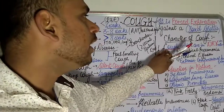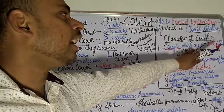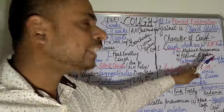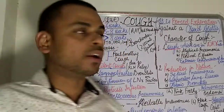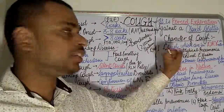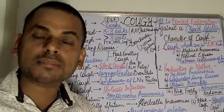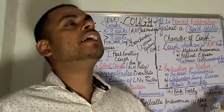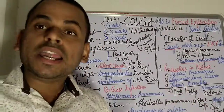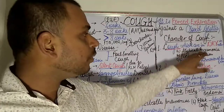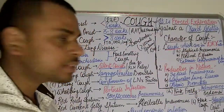Dry cough occurs in atypical pneumonia, pleural effusion, and extrinsic compression of the airway. In atypical pneumonia, the secretions are not in the alveoli but in the interstitial spaces between the alveoli of the lungs, so the cough is dry in nature.